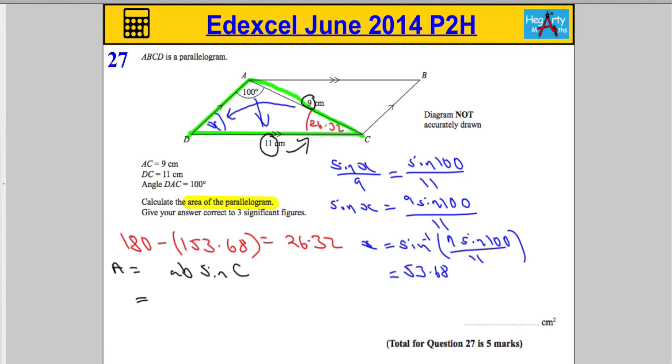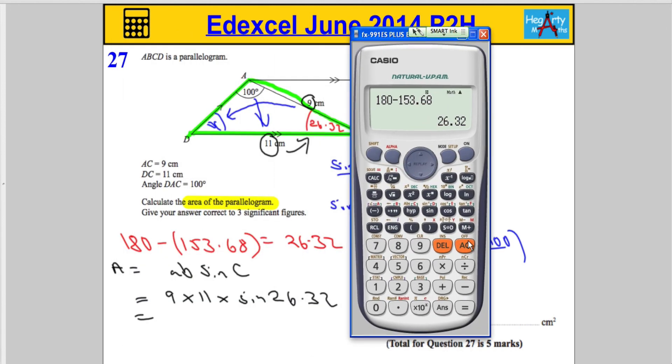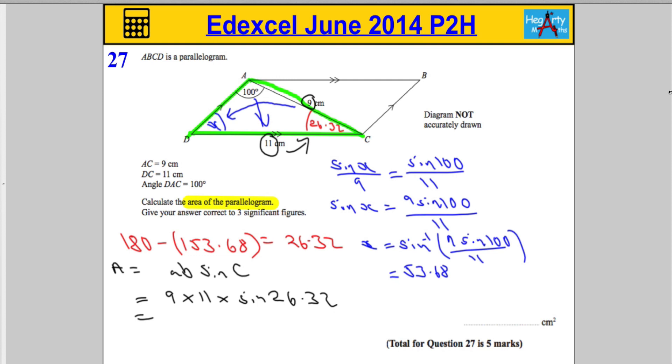So, we're going to use that side, and that side, and the angle trapped between. So we're going to do 9 times 11 times sine of 26.32. And let's get the calculator out for this part. We're going to do 9 times 11 times sine of 26.32. Close that off. And we get 43.89 to 3 significant figures, 43.9. So 43.9. And that should get you all 5 marks.